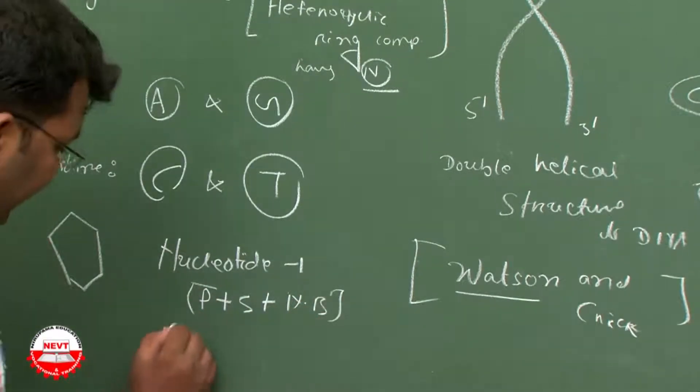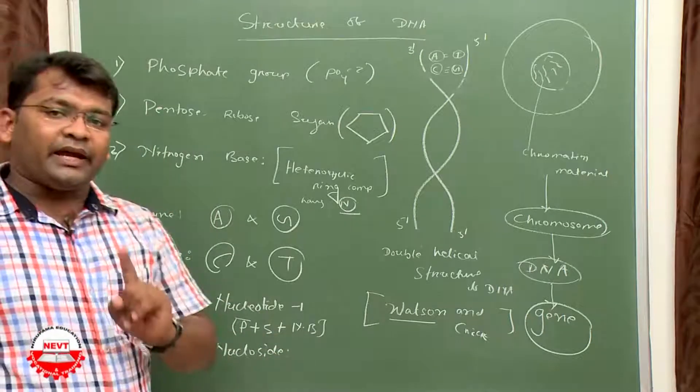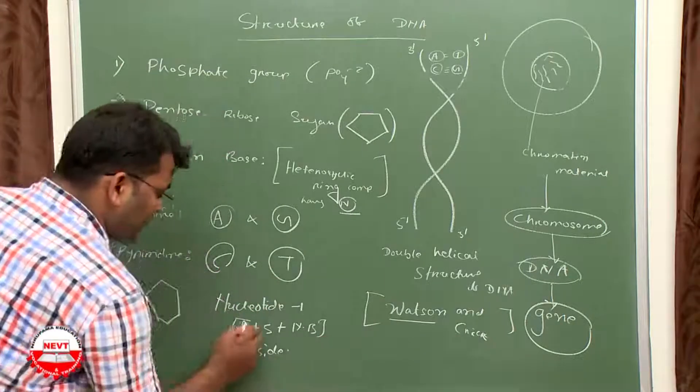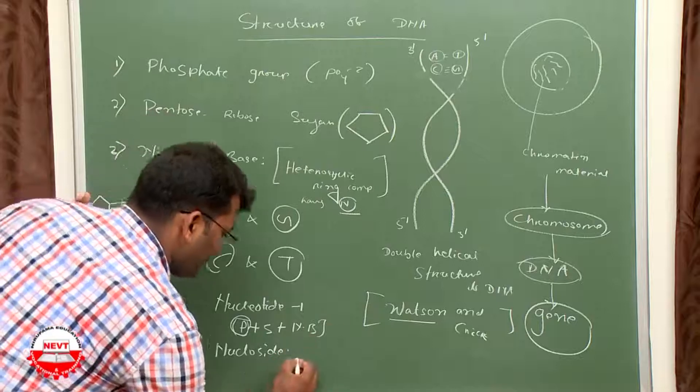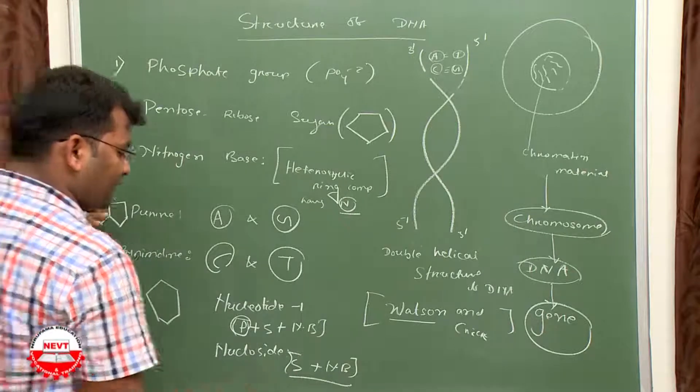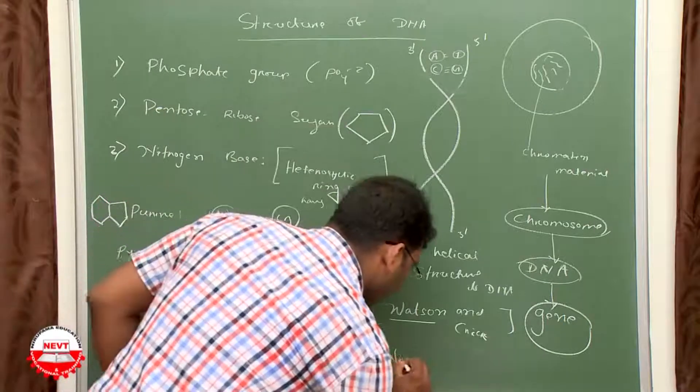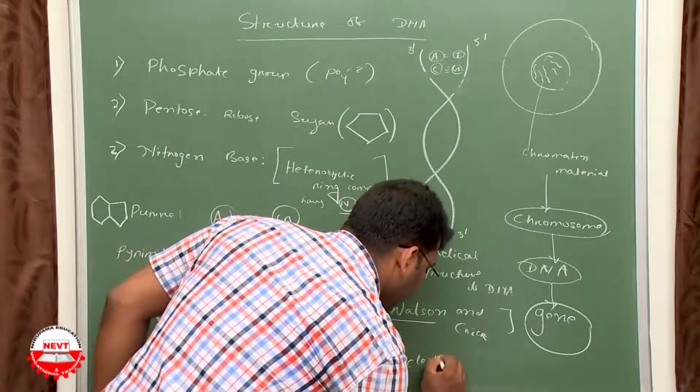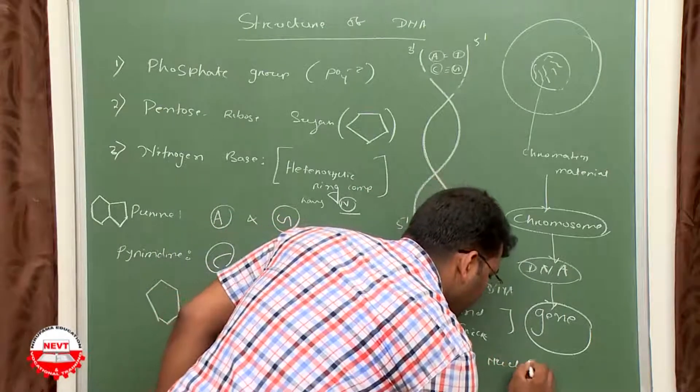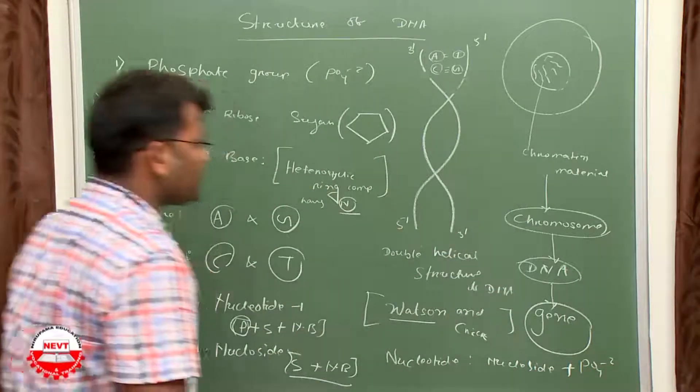What about nucleoside? Remember, nucleoside except phosphate - sugar plus nitrogen base is called nucleoside. Nucleotide contains nucleoside plus phosphate group. This is the structure of DNA.